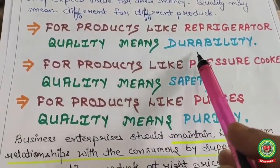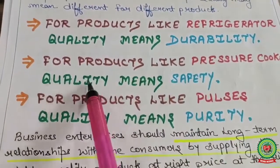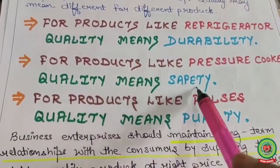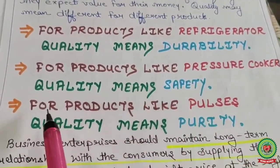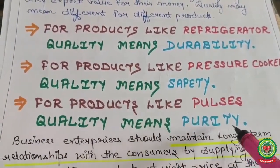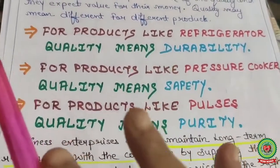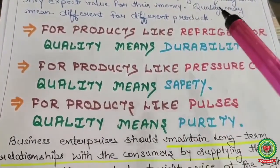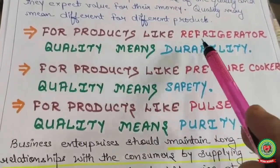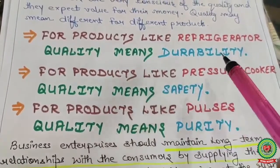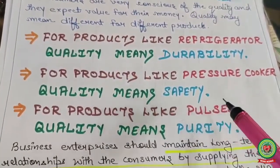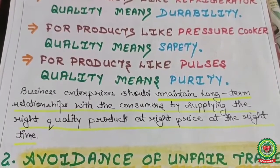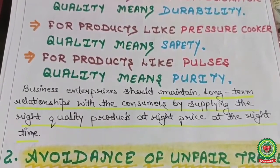Customers want durability from a refrigerator. For products like a pressure cooker, quality means safety. For products like pulses, quality means purity. So different products have different quality expectations — it totally depends on the nature of the product. Refrigerator: durability; pressure cooker: safety; pulses: purity.